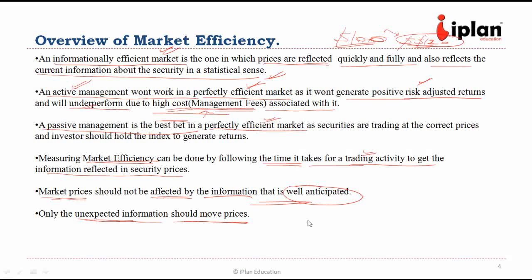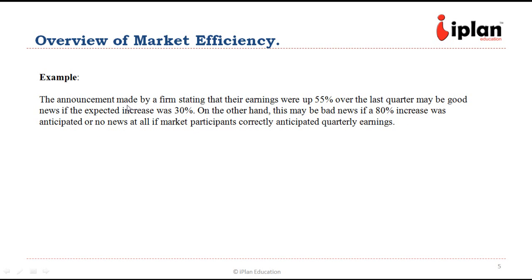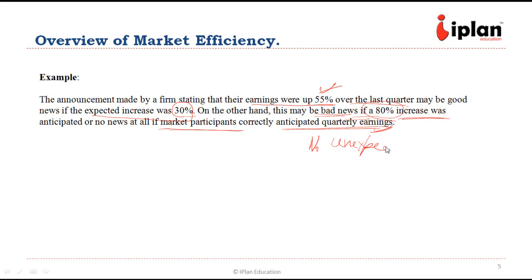For example, if a firm announces that earnings were up 55% last quarter, it may be good news if the expected increase was just 30%, meaning the company outperformed expectations. On the other hand, it could be bad news if expectations were 80%, meaning the company underperformed. If market expectations were 50% and the company reported the same, there should be no change in price since there is no unexpected information — the price should not change at all.